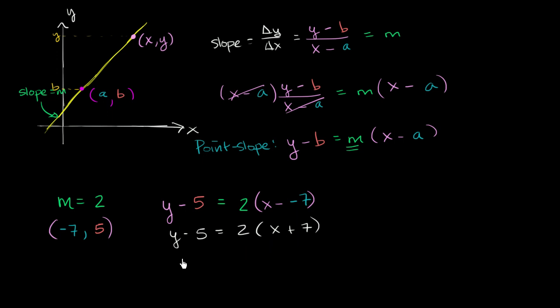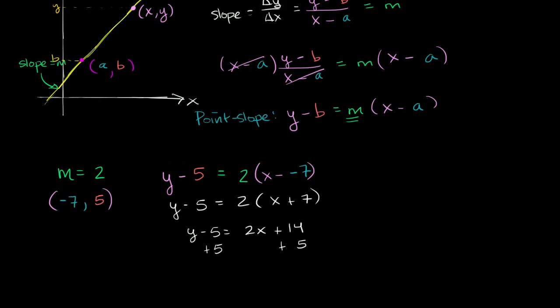To do that, we just have to distribute this 2. So we get y minus 5 is equal to 2 times x plus 2 times 7, so it's equal to 14. And then we can get rid of this negative 5 on the left by adding 5 to both sides of this equation. And then we are left with, on the left-hand side, y.